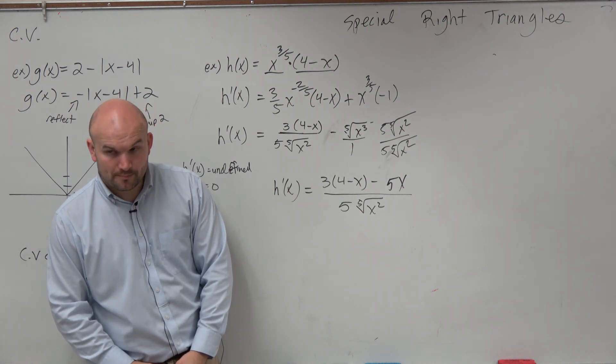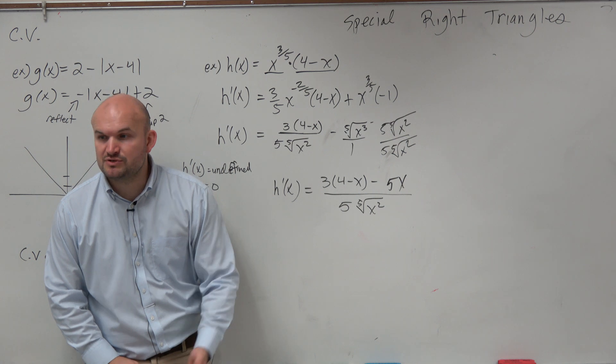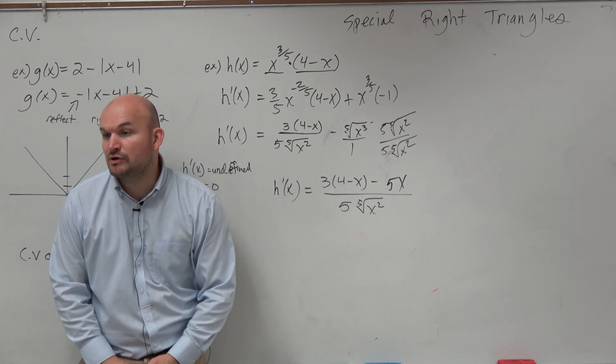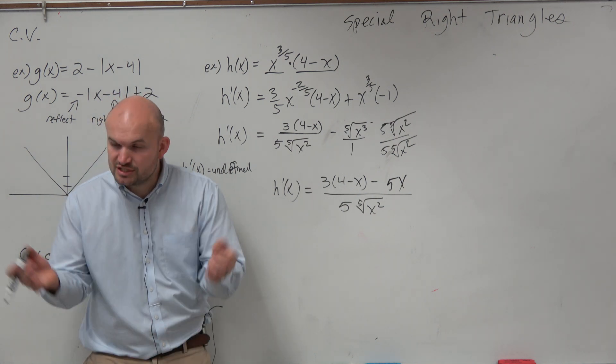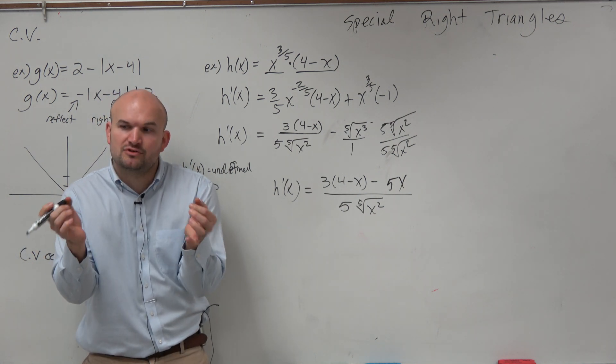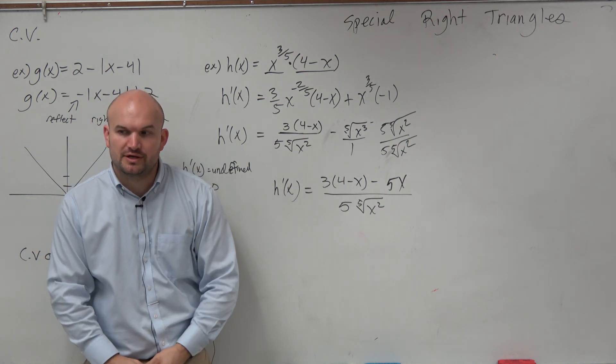Nope. Like, square root of 3 times square root of 3 is the square root of 9, right? So you multiply the radicals, but you keep the radical there.